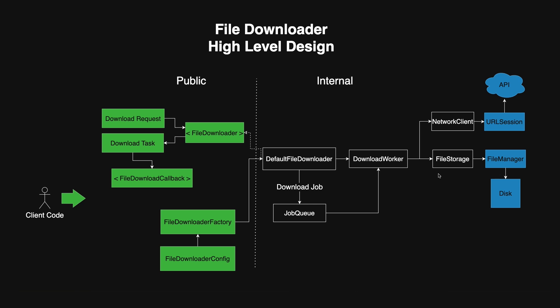The FileStorage component handles all interactions with the file system. It is responsible for creating temporary files when the download starts, appending new data chunks as they arrive, and finalizing the file once the download completes. It also cleans up partial files if a download fails or gets cancelled. It acts as a low-level layer that turns streamed bytes into a real, usable file on disk. Because you own both the network client and file storage, you can inject test doubles, making it easy to write unit tests without ever touching real files or actual servers.